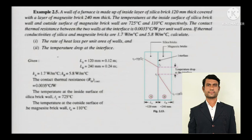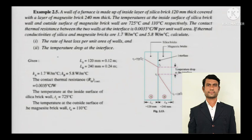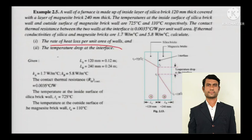Next numerical: a wall of a furnace is made up of an inside layer of silica brick 120 mm thick, covered with a layer of magnesite brick 240 mm thick. The temperature of the inside surface of the silica brick wall and outside surface of the magnesite brick wall are 725 degree Celsius and 110 degree Celsius respectively. The contact thermal resistance between the two walls at the interface is 0.0035 degree Celsius per watt per unit wall area. The thermal conductivities of silica and magnesite bricks are 1.7 and 5.8 watts per meter degree Celsius. Calculate the rate of heat loss per unit area of the wall and the temperature drop at the interface.